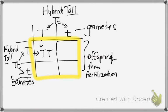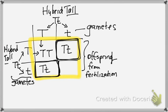What would go in this box right here? What would go in that box? Big T, little t. Big T, little t. And we always keep our capital letter first. How about bottom left? Big T, little t. And then bottom right? Little t, little t.